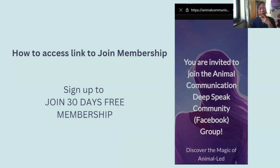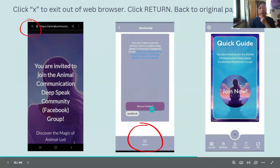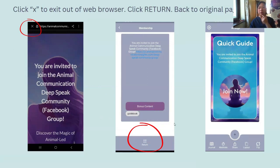This is the page where you can sign up to request membership in the DeepSpeak community group. Now just come out of that by looking for an X on the top left-hand corner. If you're on your mobile, just come out of your URL. It takes you back to the screen with the lilac and the bonus content. Look for the Return button at the bottom, and then you're back to where you were.